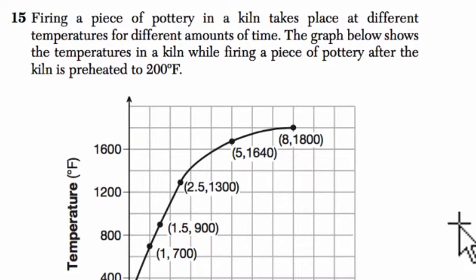Firing a piece of pottery in a kiln takes place at different temperatures for different amounts of time. The graph below shows the temperatures in a kiln while firing a piece of pottery after the kiln is preheated to 200 degrees Fahrenheit. So we've got a lot of context here. But let's just skip ahead to the question.